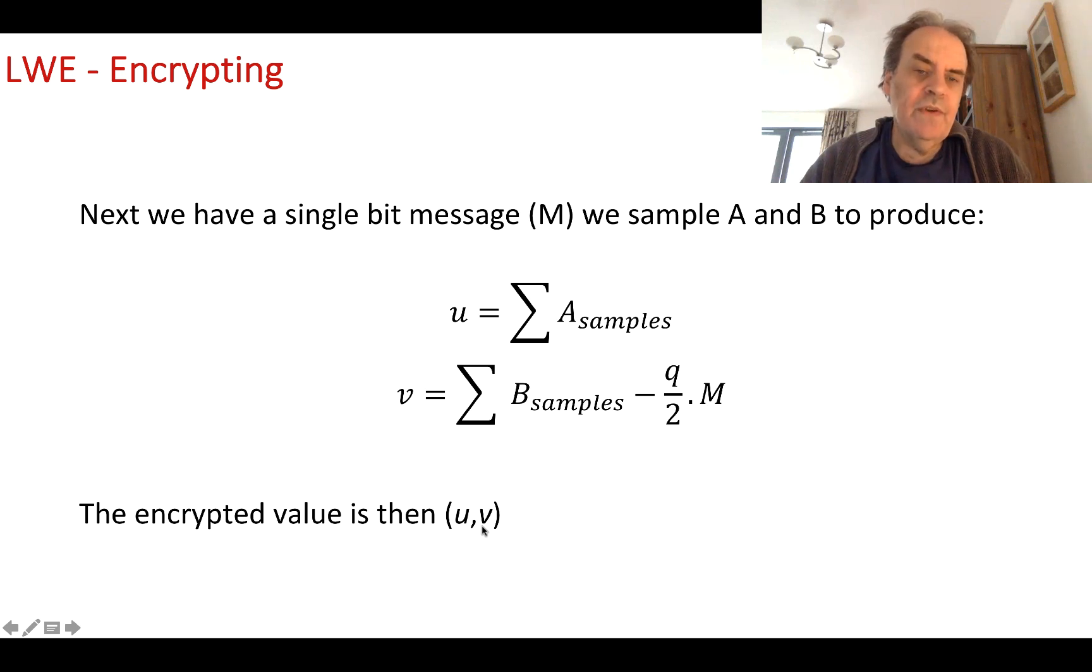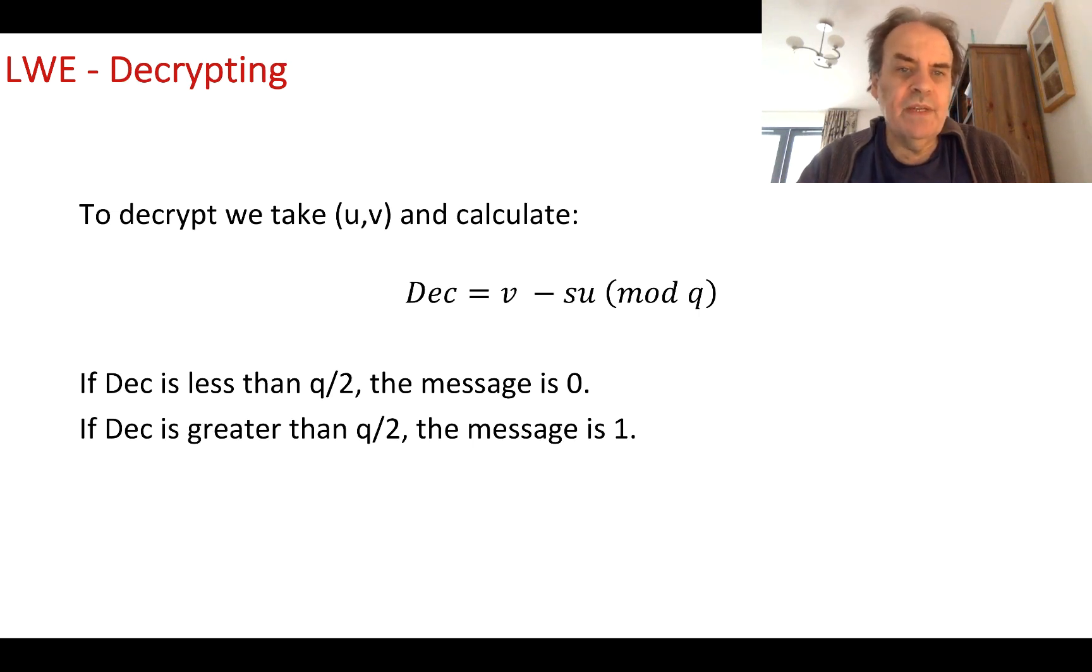When we receive U and V, how do we decrypt? We decrypt by taking V minus S times U, mod Q. If the decrypted value is less than Q upon 2, the message was 0. If it was greater than Q upon 2, the message was 1.